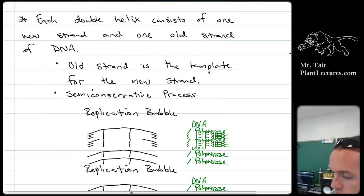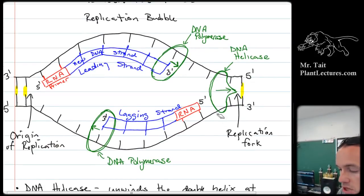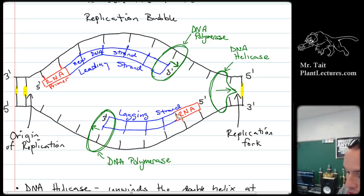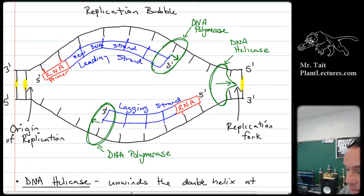DNA replication stuff. You need to know there's a leading strand and a lagging strand. The leading strand goes towards the replication fork — the area where DNA helicase is opening up the DNA double helix — and the lagging strand is moving in the opposite direction. The lagging strand has to keep jumping back, producing a bunch of fragments called Okazaki fragments, which are joined together by DNA ligase.